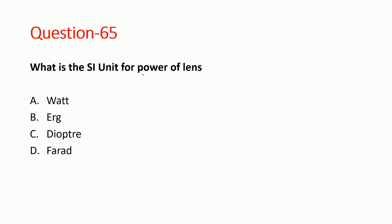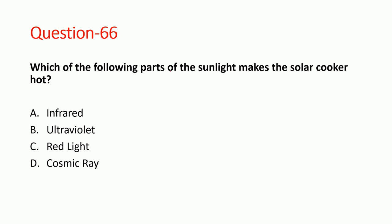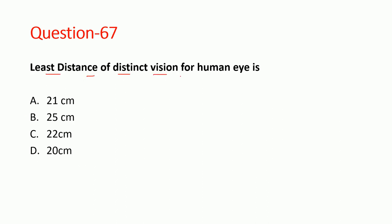Next question: what is the SI unit of power of a lens? The SI unit of power of a lens is diopter. Option C is correct. Next question: which part of sun rays makes the solar cooker hot? The infrared rays make the solar cooker hot. Option A is correct. The least distance of distinct vision of the human eye is 25 centimeters. Option B is correct.